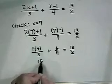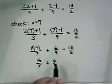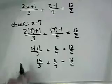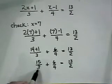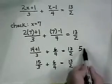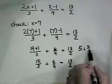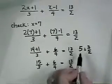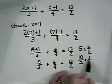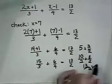We get 15/3 plus 6/4 equals 13/2. And then we'll see that 15/3 is 5, and 6/4 is 3/2. 5 is 10/2 plus 3/2 is indeed 13/2, and our problem does check.